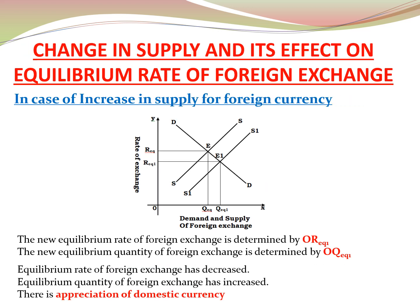Now let us take the case of an increase in supply. When there is an increase in supply of foreign exchange, the supply curve shifts to the right from SS to S1S1. D1D1 intersects S1S1 at point E1, and the new equilibrium rate is OR1 with quantity OQ1. This shows that the foreign exchange rate has decreased — there is appreciation of domestic currency, meaning a rise in the value of home currency in terms of foreign currency. Appreciation of home currency makes imports cheaper, which is why imports will increase.